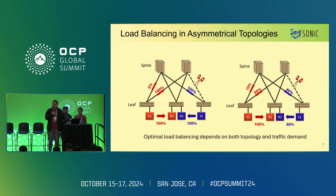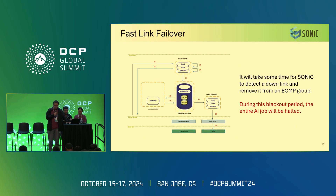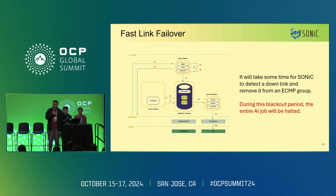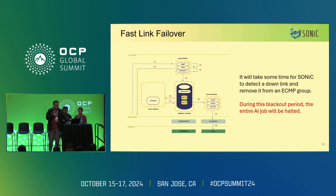Since we've talked about asymmetric topology due to link failures, let's dig into link failures. The current SONiC architecture requires some time to detect a bad link and remove it from the ECMP group — a process dependent on CPU and routing scale. During this blackout period, the link is actually down but the switch still forwards packets on it, causing all packets to be dropped and training jobs to be disrupted. If this blackout period is long, you'll have RDMA timeouts, NIC errors, and network disruption. We need to accelerate this process and achieve fast link failover — one direction is to offload link failover to the hardware.